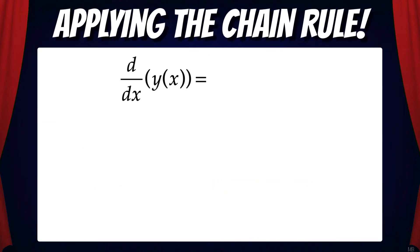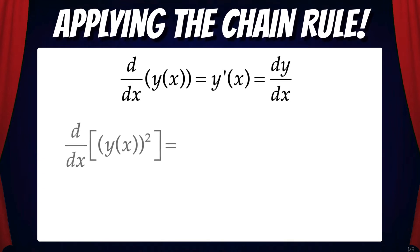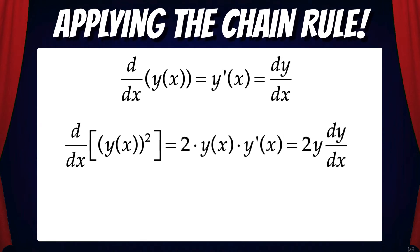Let's look at a few examples. If we want to find the derivative of y of x but we don't know what y of x is, all we can say is that the derivative is y prime of x, which is the same as dy/dx. The same holds true if we have y of x squared. If we want to find the derivative of that, we apply the chain rule, which gives us 2 times y of x times y prime of x — the same as 2y times dy/dx.